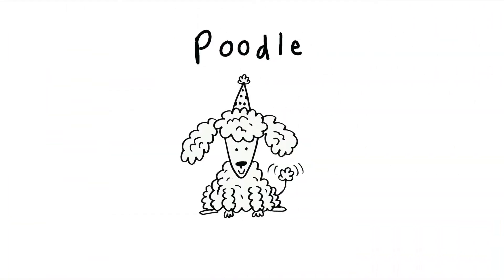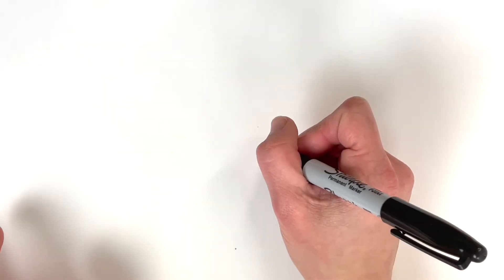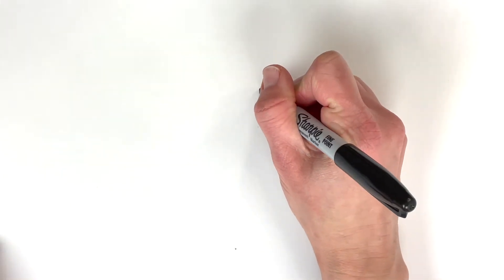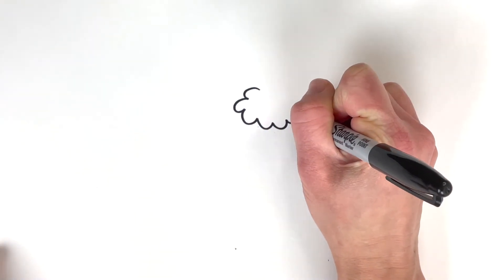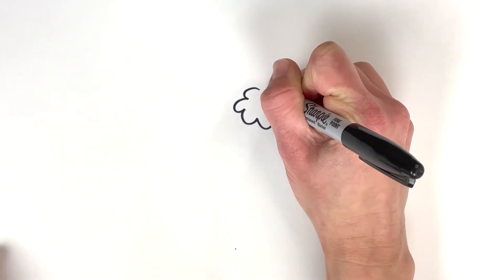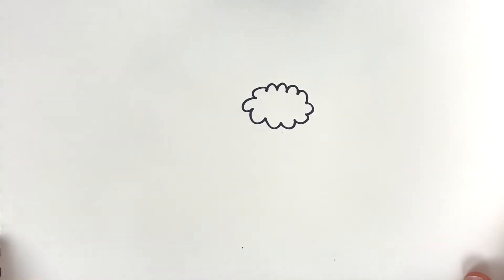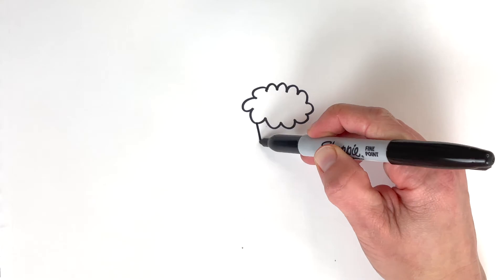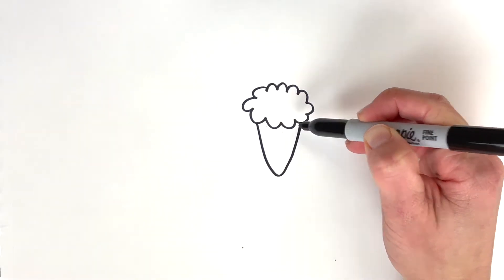All right, my next pup is going to be a poodle. There has to be a poodle at the party, right? So I'm going to start with this cloud shape like that.